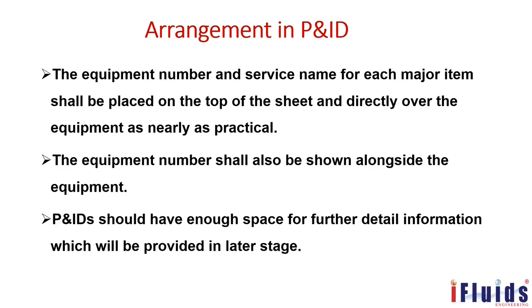The P&ID should have enough space for further detailed information to be provided at a later stage. If some vendor information is not yet available — for example, pump details not yet provided by the vendor — you should leave blank space. You should not place other equipment nearby that would make later-stage editing difficult. Leave space so that at the appropriate stage you can add the missing information.